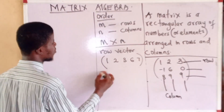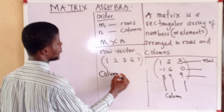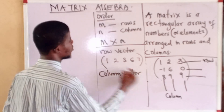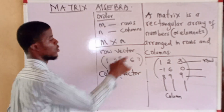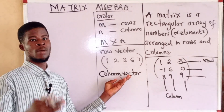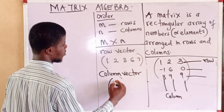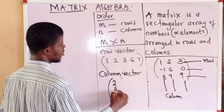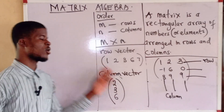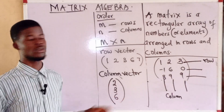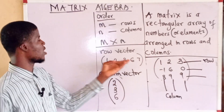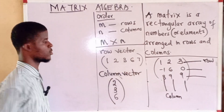A matrix with one column is called a column vector, also called a column matrix. For example, 1, 2, 3, 6 — this is a column vector because it has one column and multiple rows. A row vector or row matrix has one row and multiple columns.